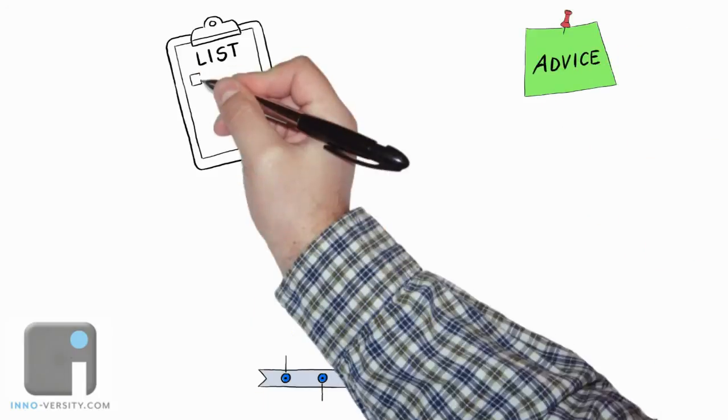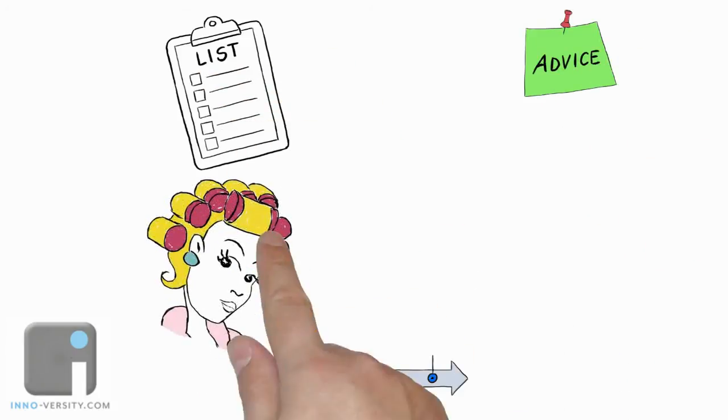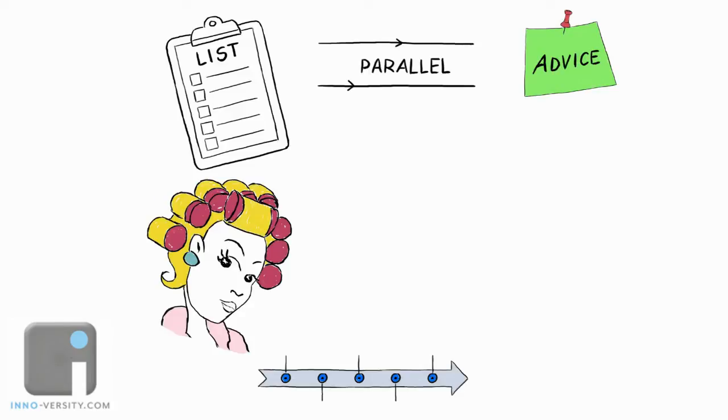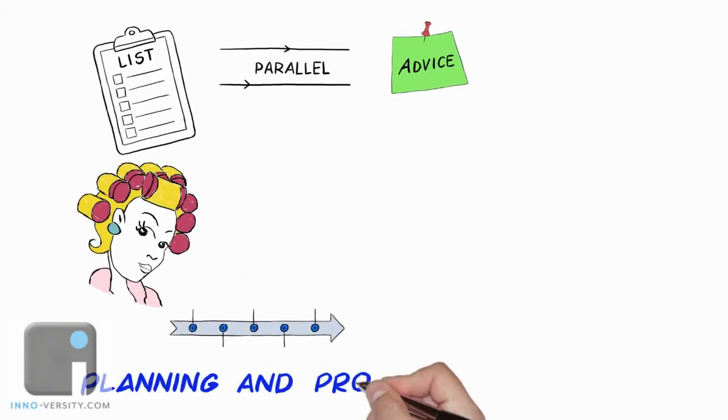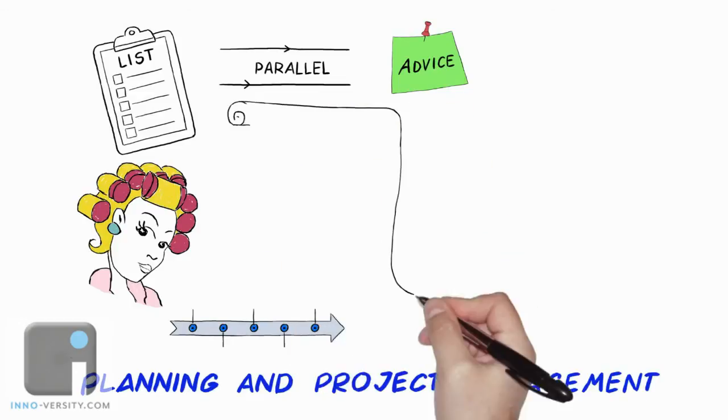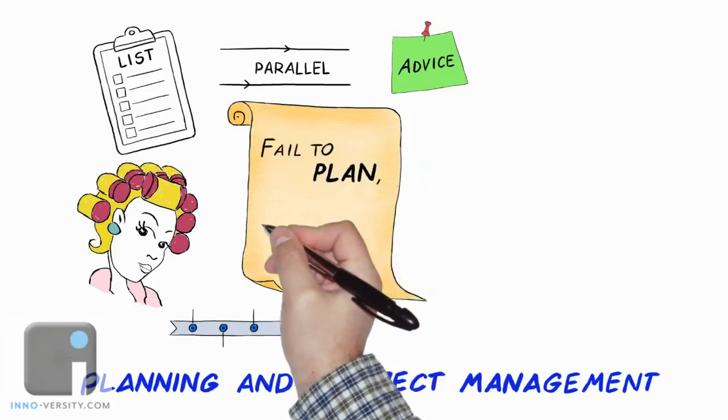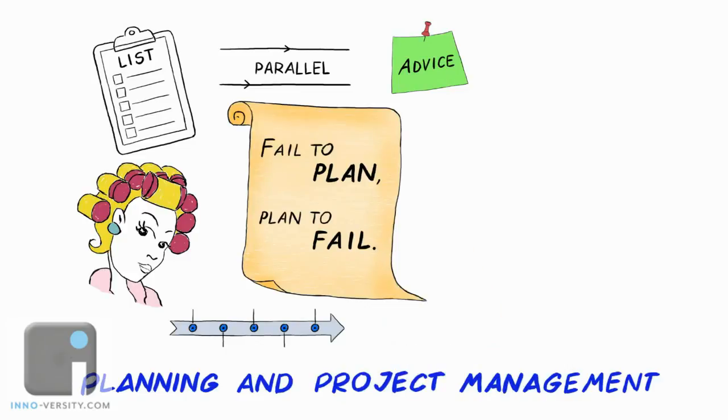No list. No timeline. No advice. No checklist. No team. Nothing in parallel. It all adds up to a giant mess. We can do so much better with a little planning and some project management. As the saying goes, fail to plan, plan to fail.